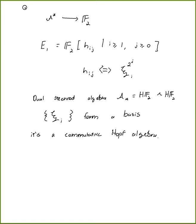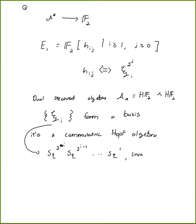I won't say too much about various bases on the dual Steenrod algebra. The ξ_i elements are the linear duals of something like Sq^{2^i} Sq^{2^{i-1}} ⋯ Sq^1.